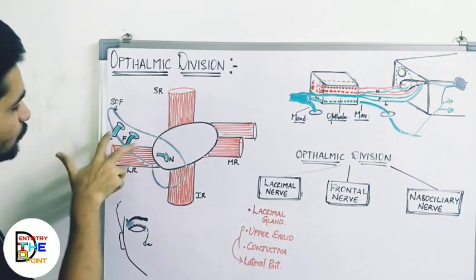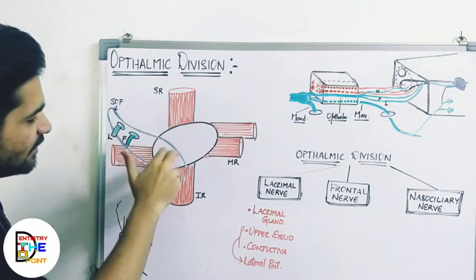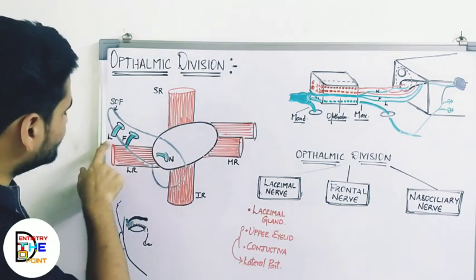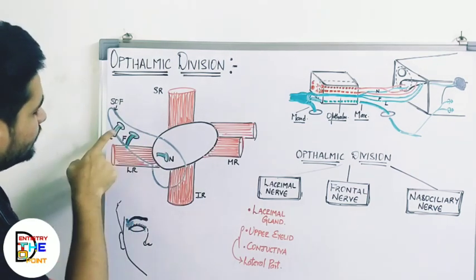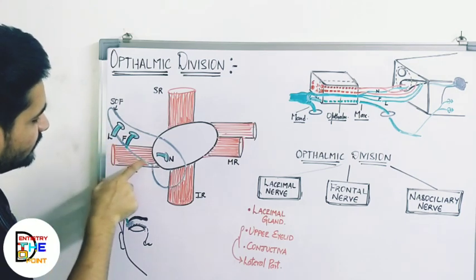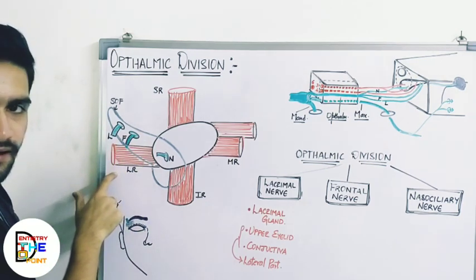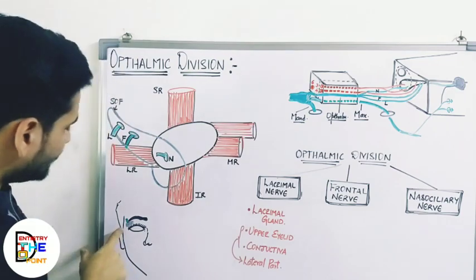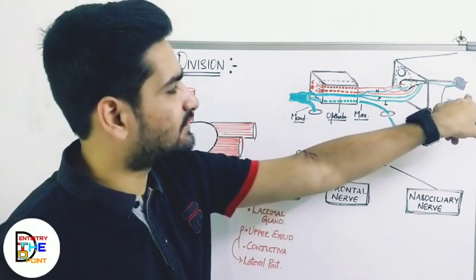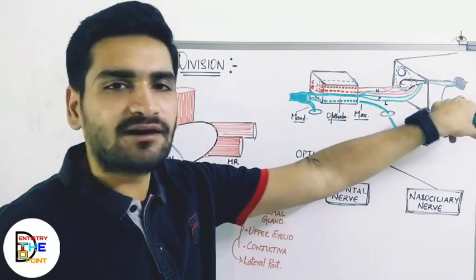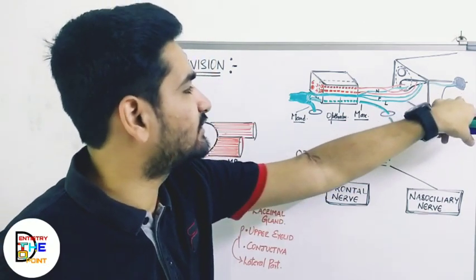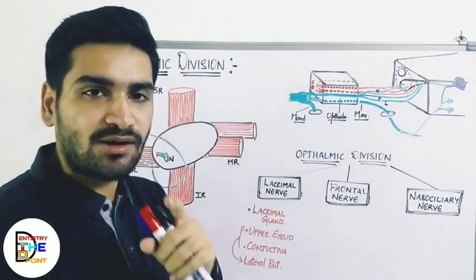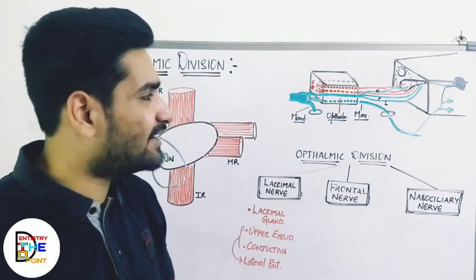In the diagram: this is the lacrimal branch, this is the frontal branch, and this is the nasociliary branch. Two branches pass through the lateral part — outside the common tendinous ring — and the medial branches involve the common tendinous ring. The lacrimal branch exits from the lateral most part of the superior orbital fissure, above the upper border of the lateral rectus muscle, and inserts into the lacrimal gland — also called the tearing gland.